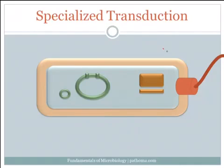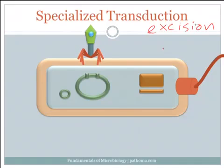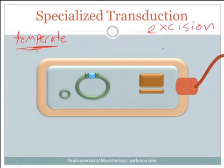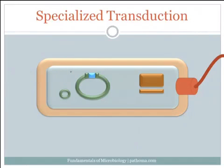Specialized transduction is a problem with excision — an excision error. There are special types of bacteriophages called temperate phages or temperate viruses. A way to help remember what they do is that they have a mild temperament, or that they are temporarily incorporated into the bacterial chromosome. This virus injects its DNA and it's temporarily incorporated into the bacterial chromosome. They have a mild temperament because they don't immediately lyse the bacterial DNA and destroy the bacterium — they actually hide out in the chromosome for a while.